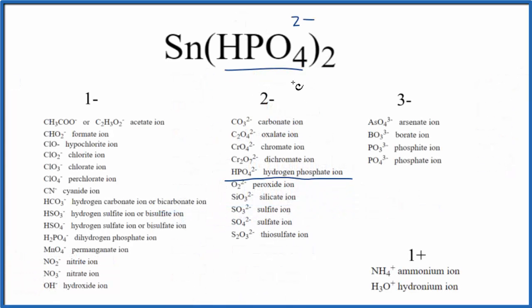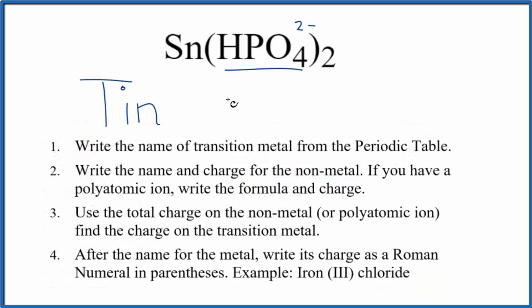So we know the name of our polyatomic ion. It's hydrogen phosphate. So we'll just write hydrogen phosphate.